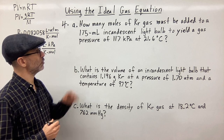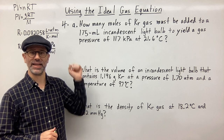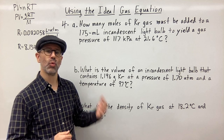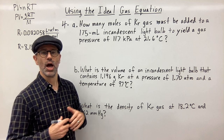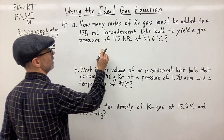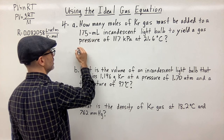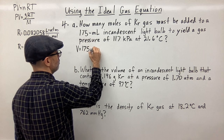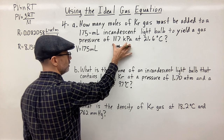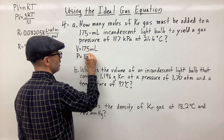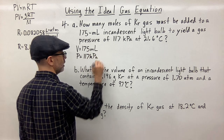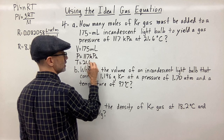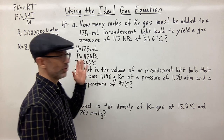Problem one: how many moles of krypton gas must be added to a 175 milliliter incandescent light bulb to yield a gas pressure of 117 kilopascals at 21.6 degrees Celsius? The first thing you want to do is list out the information given. We have volume V = 175 milliliters, pressure P = 117 kilopascals, and temperature T = 21.6 degrees Celsius.